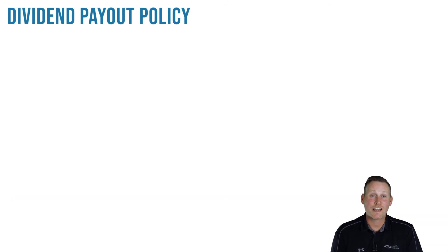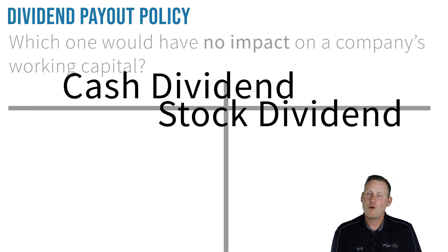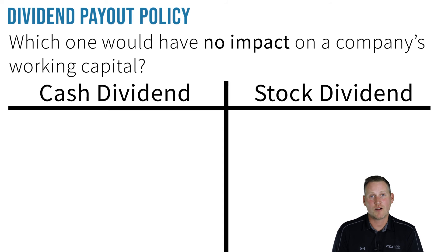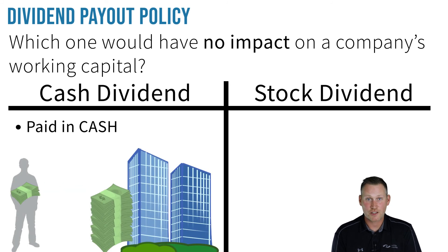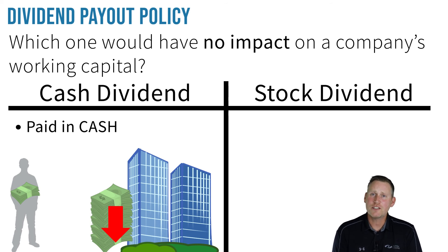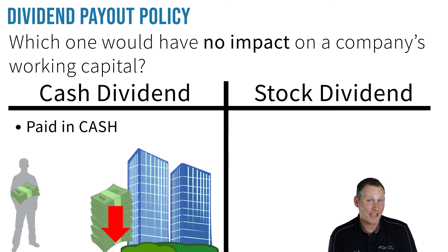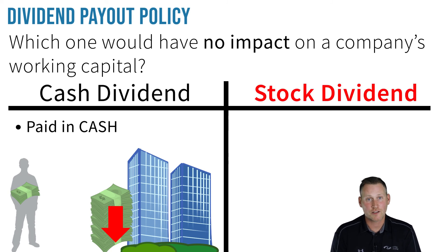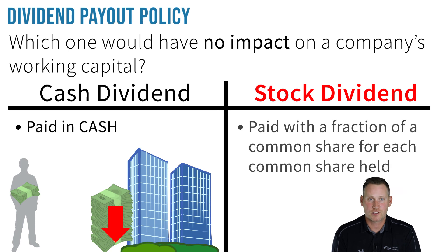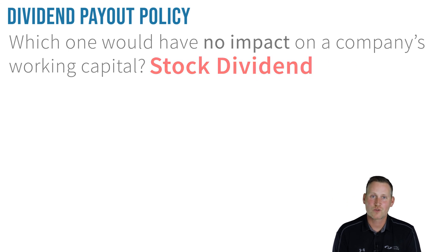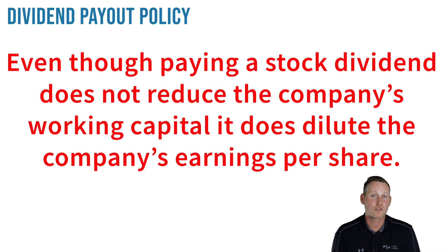Finally, let's discuss the difference between a cash dividend and a stock dividend. A cash dividend is obviously paid in cash, meaning investors receive cash and the company's cash on hand — i.e., its working capital — would have to go down. But if a company doesn't want to reduce its working capital but still wants to pay a dividend, it could elect to pay a stock dividend in lieu of cash. For example, instead of paying a $0.10 per share cash dividend, it could give some fraction of a common share for each common share held. The downside is that even though paying a stock dividend doesn't reduce the company's working capital, it does dilute the company's earnings per share.